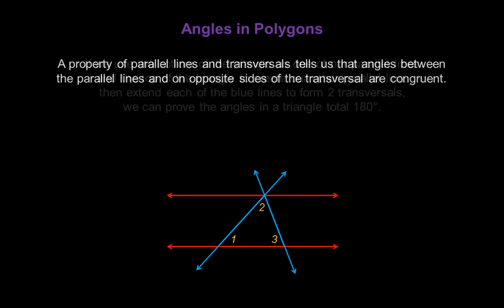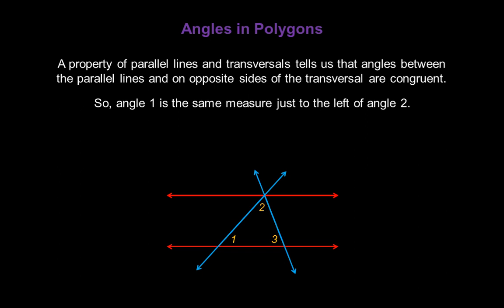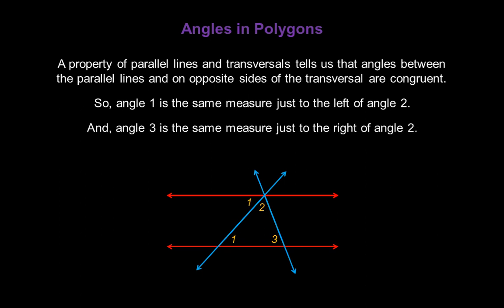Here's how. A property of parallel lines and transversals tells us that angles between the parallel lines — the red lines — and on opposite sides of the transversal — the blue lines — are congruent. So angle 1 in the triangle is the exact same measure just to the left of angle 2 on the other side of its transversal. And angle 3 in the triangle is the same measure just to the right of angle 2, on the other side of its transversal.